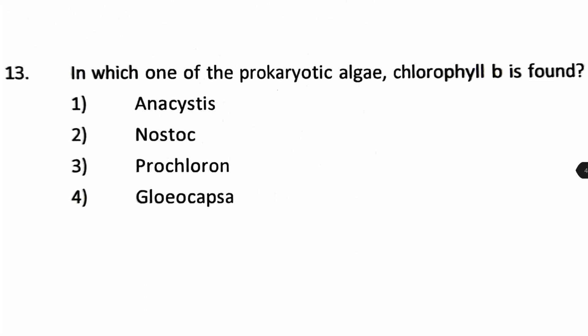In which one of the following prokaryotic algae is chlorophyll B found? Options are Anacystis, Nostoc, Prochloron, and Gleocapsa. Chlorophyll B is actually not found in Anacystis, Gleocapsa, and Prochloron. The answer is Nostoc.